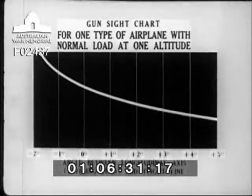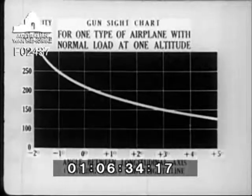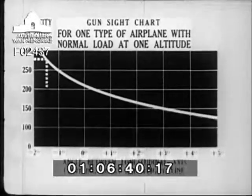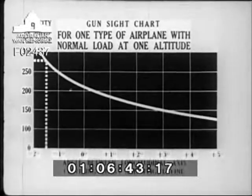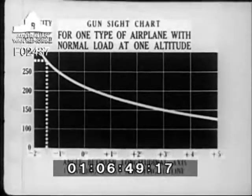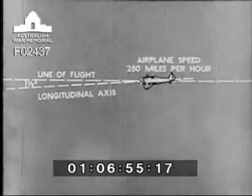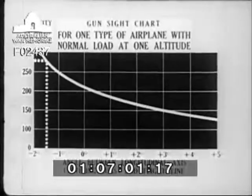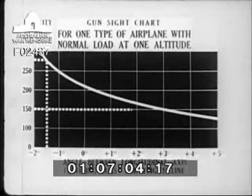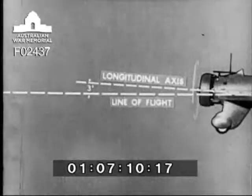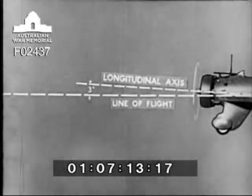For example, this typical gun sight chart shows that at an air speed of 280 miles per hour at sea level, the flight line will be one and one-half degrees above the line parallel with the leveling lugs — that is, the nose of the airplane will be one and one-half degrees below the line the airplane is actually flying. At a speed of 150 miles per hour at the same altitude, the flight line will be three degrees below the longitudinal axis, or the line parallel with the leveling lugs.